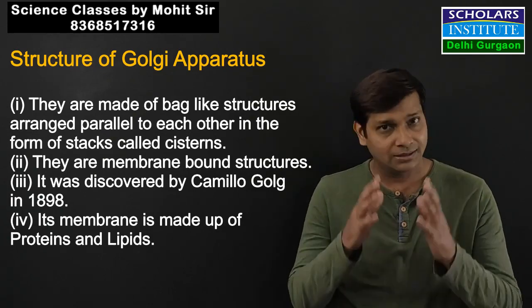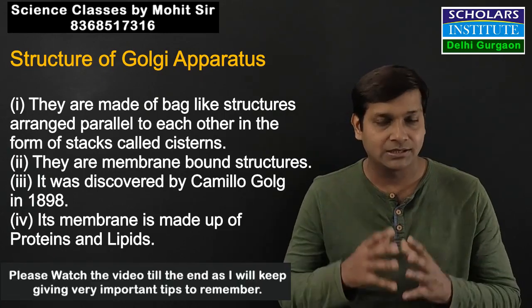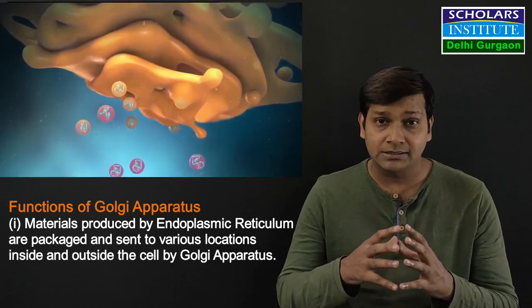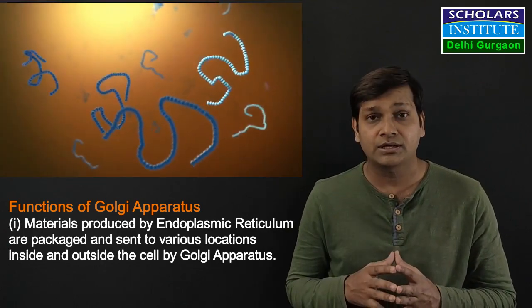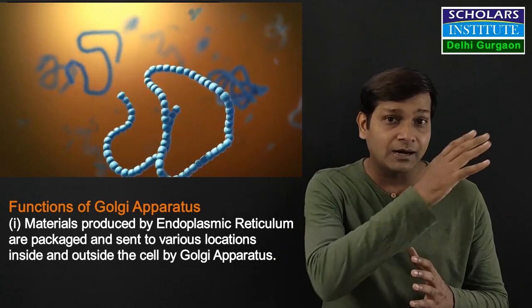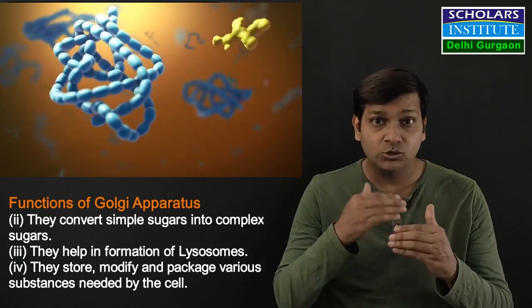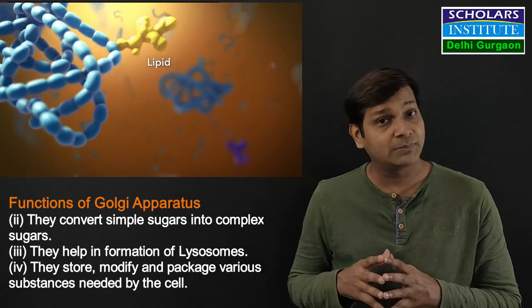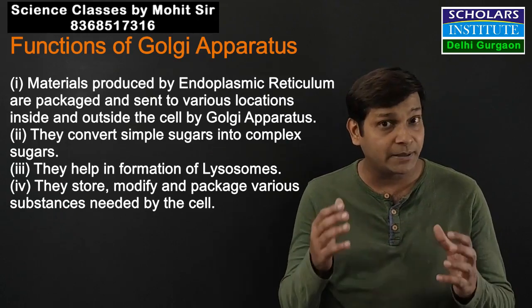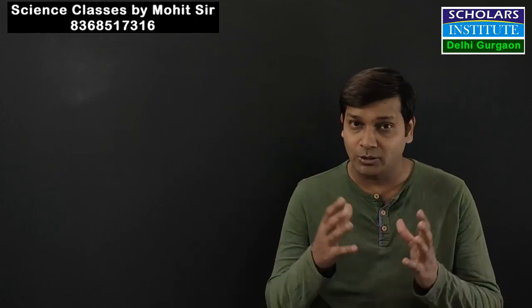The Golgi apparatus was discovered by Camillo Golgi in 1898. It is a double membrane-bound cell organelle with bag-like stacked structures. The important function of the Golgi apparatus is to package and transport different substances within the cell. It also synthesizes complex sugars and complex carbohydrates. The Golgi apparatus produces lysosomes, which will help in various cellular processes.